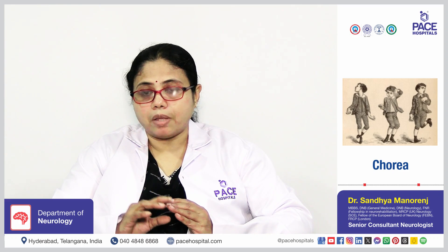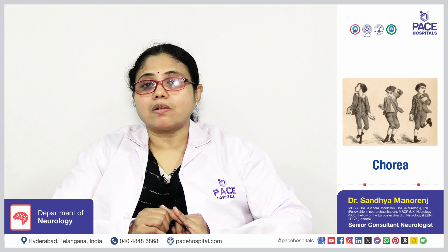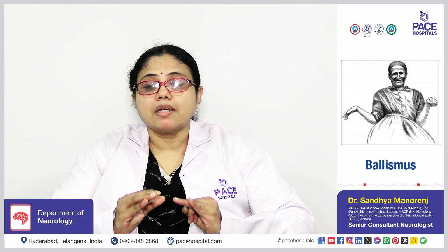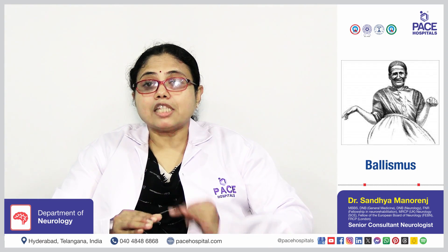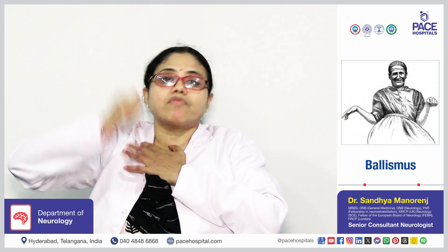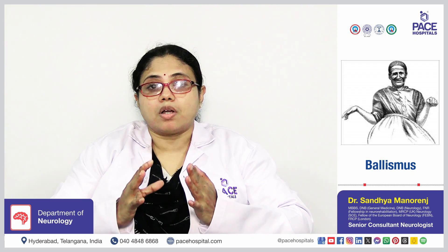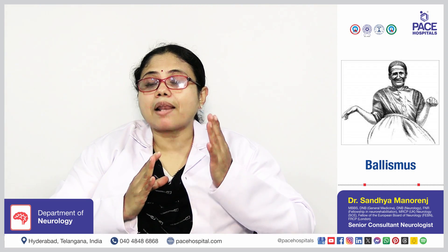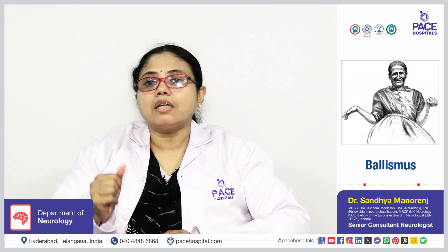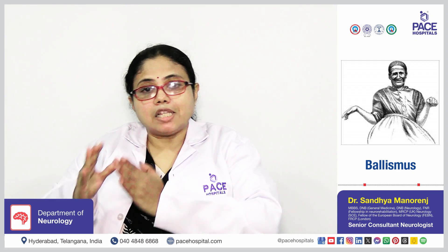The second type of hyperkinetic movement disorder is ballismus. Ballismus is a term for sudden, jerky, proximal movements of the limbs. It is usually seen after a stroke — that is, a paralytic attack or brain stroke — where mostly one part of the body starts jerking. This is called ballismus or hemi-ballismus.